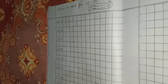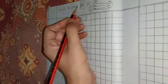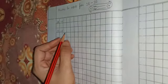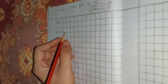Hello students, in the previous classes we have learnt how to write numbers in words from 1 to 20. Today we are going to learn how to write numbers in words from 21 to 30.